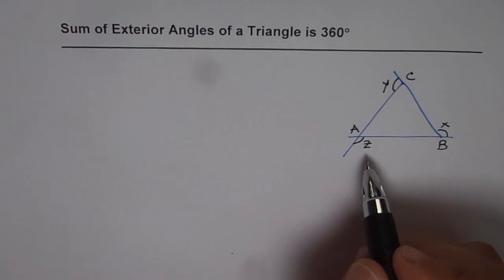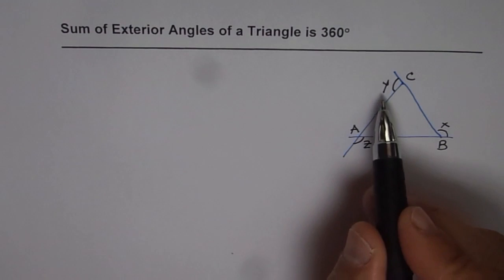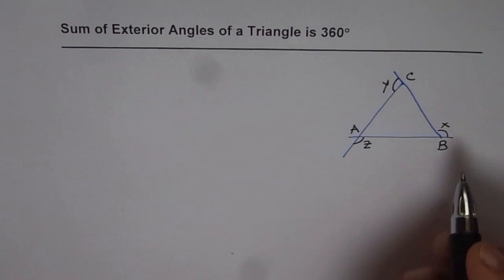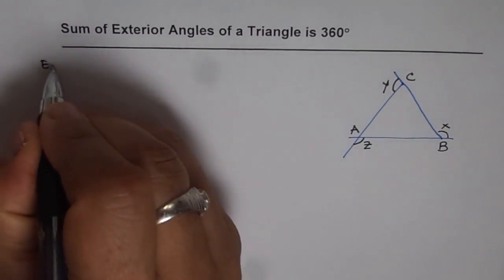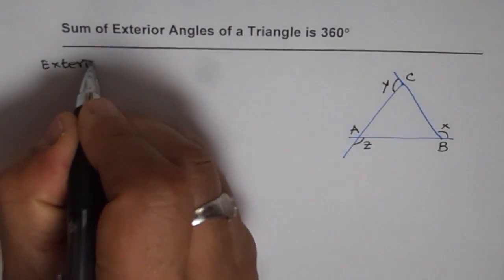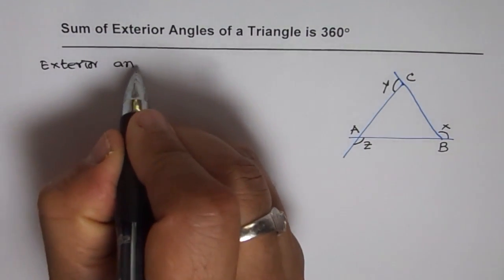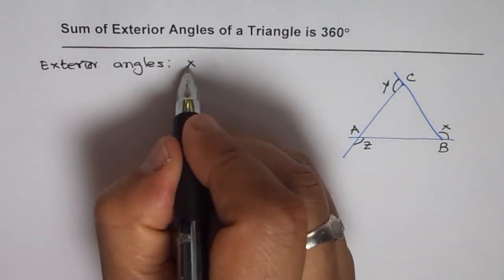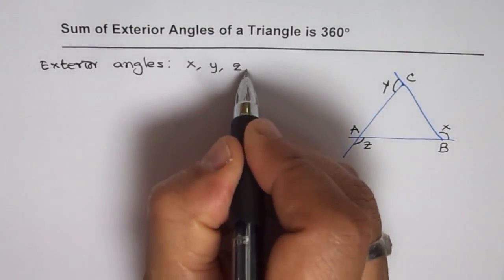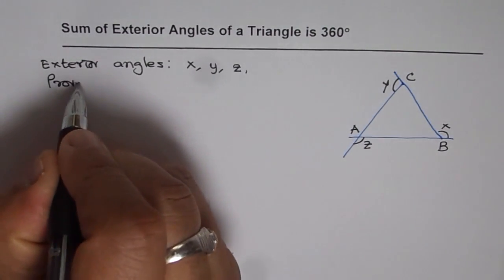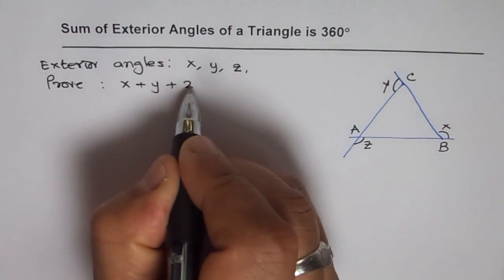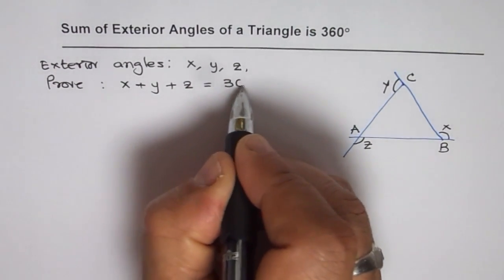So what we need to prove is that sum of angle x, y, and z is 360 degrees. So these are the exterior angles. We have exterior angles which are angle x, y, and z. We need to prove that x plus y plus z is equal to 360 degrees.